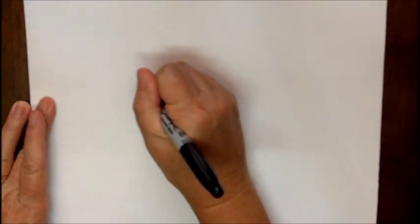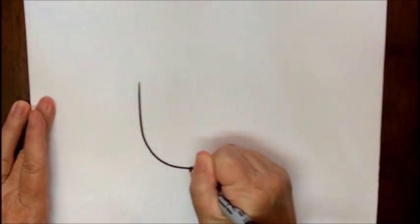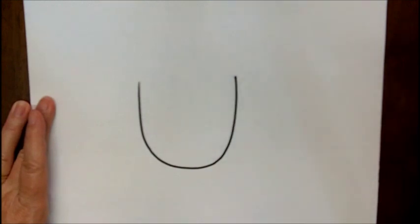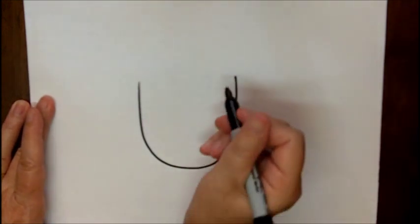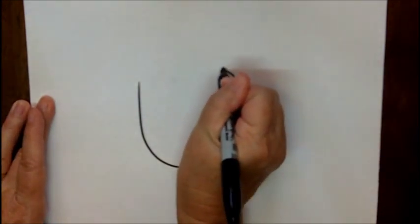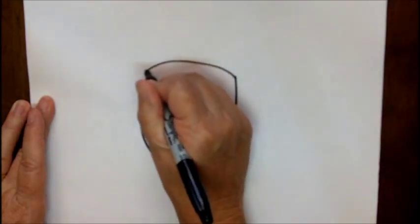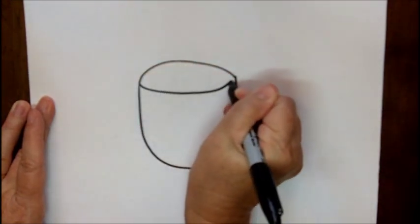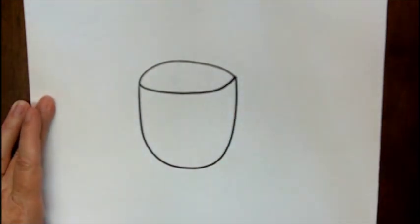We're going to start out with the letter U. Now attached to that we are going to make an oval that touches the top of the letter U. Kind of tricky, just like that.